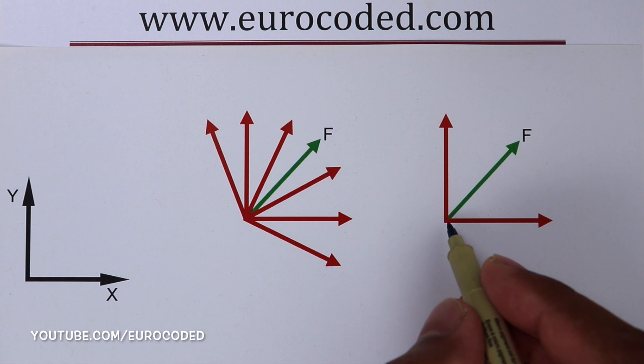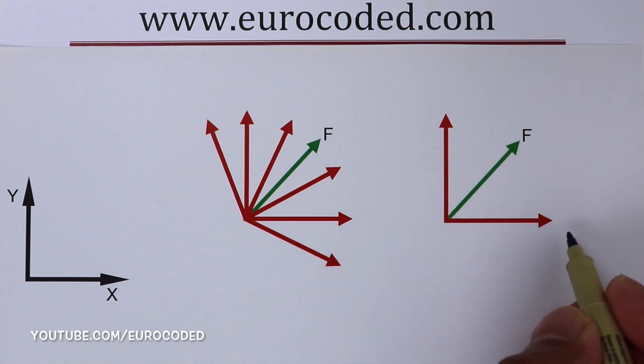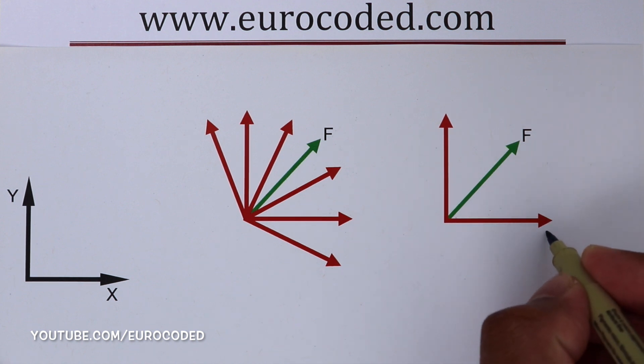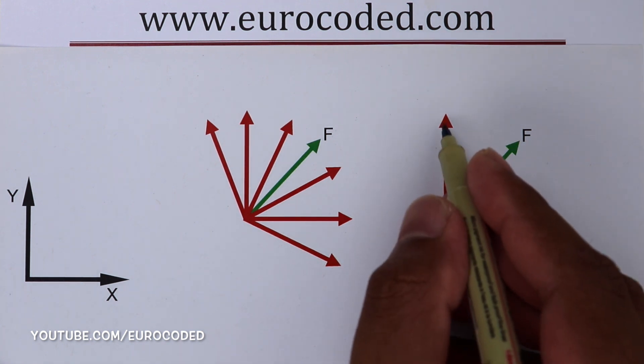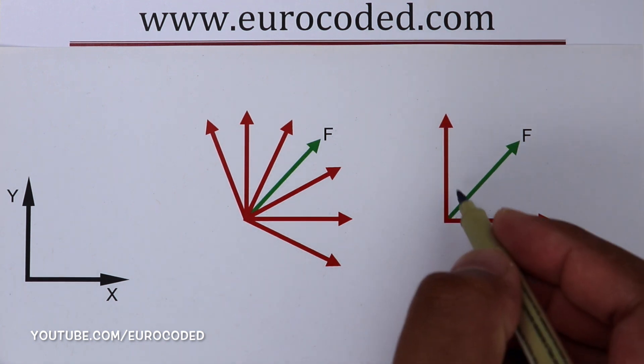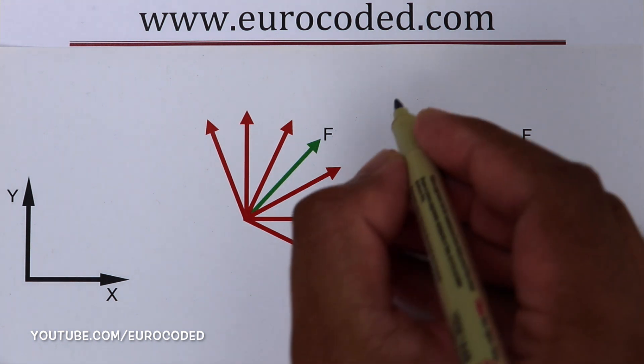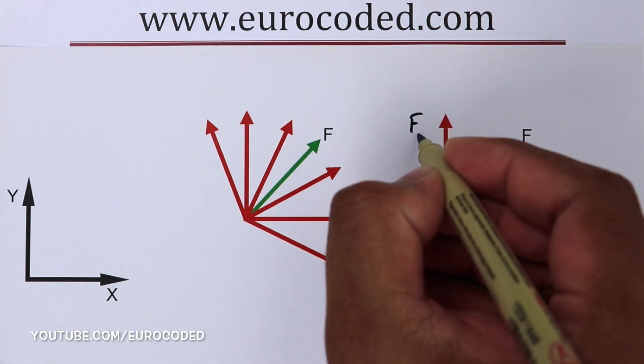Components in the horizontal direction are called horizontal forces, and they can be noted as Fx. Components in the vertical direction are called vertical forces, and they can be noted as Fy.